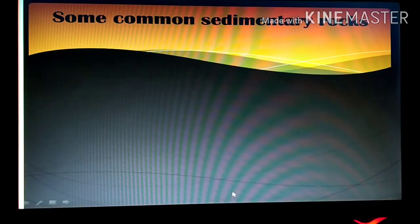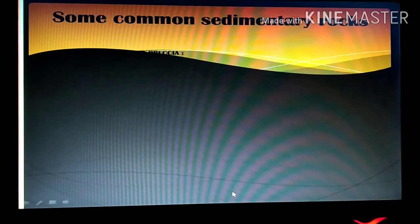Now I will discuss some common sedimentary rocks with you. The first is conglomerate breccia. These are the coarse grain clastic rocks whose size is more than 2 mm in diameter. And they are held together by cement of fine grain clastic matrix.